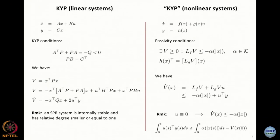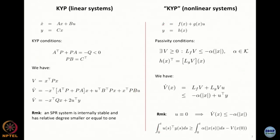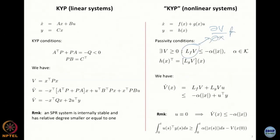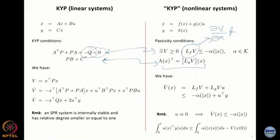Now that we know the definitions of passivity and the Kalman-Yakubovich-Popov statement for linear systems and its equivalent for nonlinear systems — taken from Khalil — I will work with this notation: L_f V is the directional derivative of V in the direction of f, i.e., the partial of V with respect to x times f. For linear systems, positive realness comes down to asking for a class K function alpha of the norm, and strict positive realness leads to negative definiteness of V-dot in the direction of f.